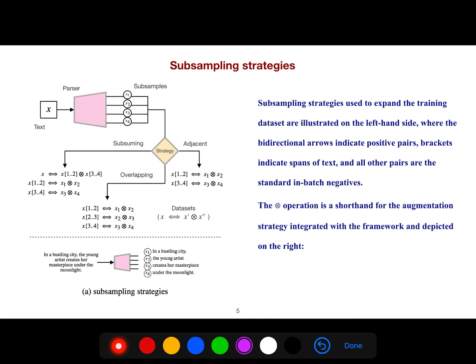This is a subsampling strategy. These subsampling strategies are used to expand the training dataset. In this particular pattern, the bidirectional arrows indicate positive pairs. These brackets indicate spans from 1 to 2 or 2 to 3. All other pairs are standard in-batch negatives. This operation, like tensor product, is a shorthand for the augmentation strategy integrated with the framework and depicted on the right.